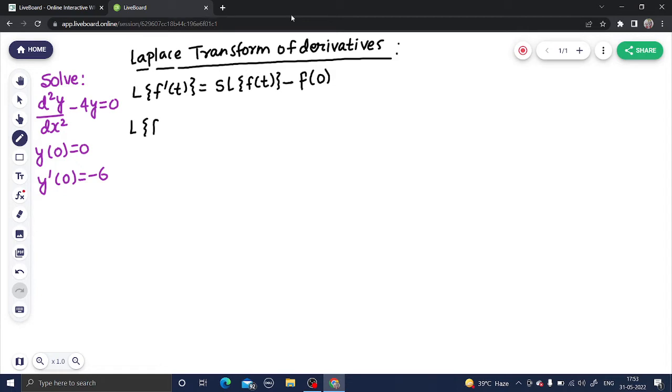Coming to Laplace of f''(t), start from that power of s which is the order. Order here is 2. First term always Laplace of f(t). Minus, decrease power, so s. Second term f(0). Third term onwards, start derivative. So s power 0, which is 1, into f'(0).